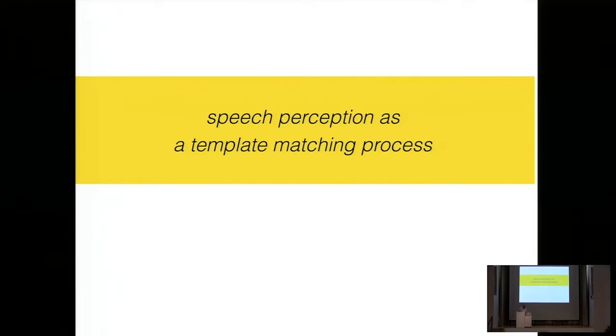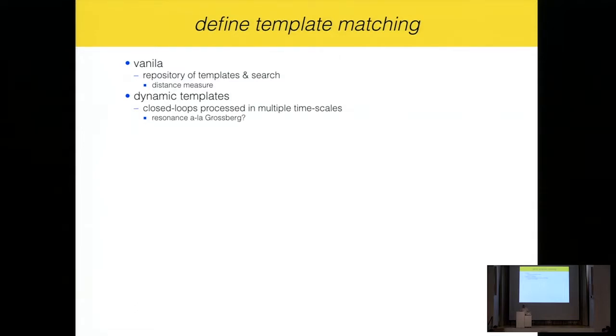I wanted to start with talking about speech perception. I'm talking functionally, a little bit away from neural data. So I wanted to start with my view of speech perception as a template matching mechanism. The vanilla definition is that you need a repository of templates, and then you do a search among those templates. For the search, you need to define a distance measure. You can extend the vanilla and talk about dynamic templates. That means closed loop processing in multiple timescales. Grossberg's adaptive resonances is an example of that.